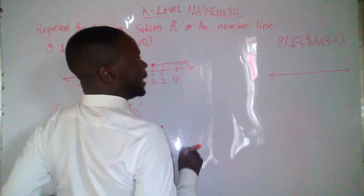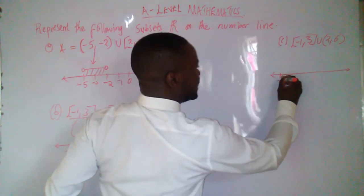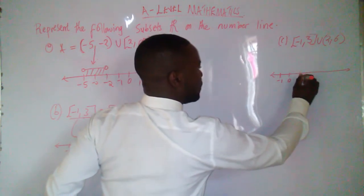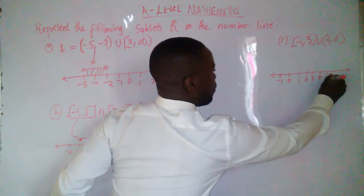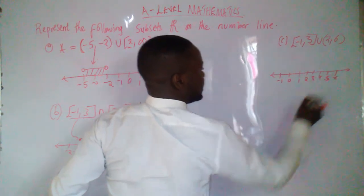So this is a number line. Then we have got negative 1, 0, 1, 2, 3, 4, 5, 6. Like this.